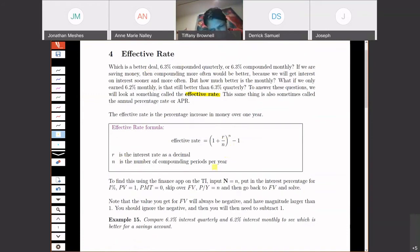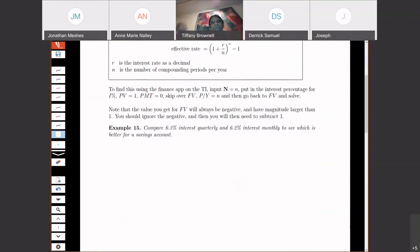So let's go ahead and skip right to an example and take a look. I want to compare a 6.3% interest rate that's quarterly to a 6.2% interest rate that's monthly to see what's better for a savings account - which one gives me a higher amount of interest after one year. So we're going to break this up: here's my 6.3% quarterly, and over on the right, we'll look at the 6.2% monthly.